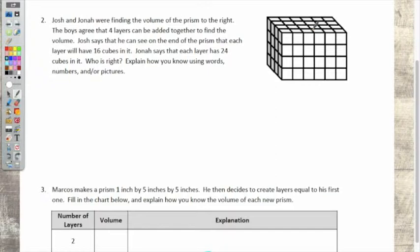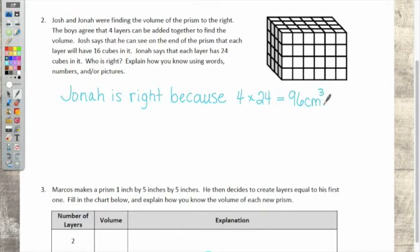That was too many words, wasn't it? Yes. Okay, let's start with Jonah is right. I'm going to put because 4 layers of 24 equals 96 cubic centimeters. You agree? That's a little shorter way to write it. Okay. Did you write that?